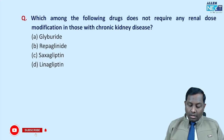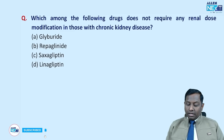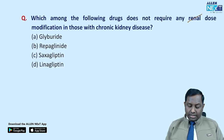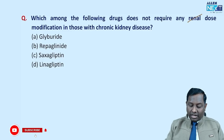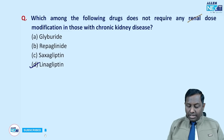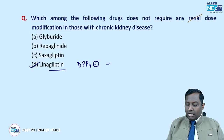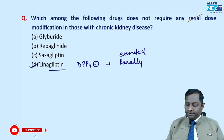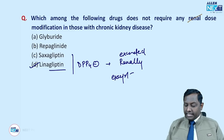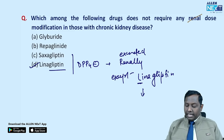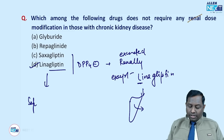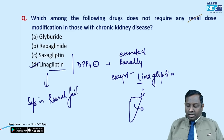Which drug does not require dose modification in patients with chronic kidney disease? The options include glyburide, repaglinide, saxagliptin, and linagliptin. This straightforward question has been repeated many times. The answer is linagliptin. All DPP-4 inhibitors are excreted renally except linagliptin, which is excreted via the hepatic route. Therefore, linagliptin is the safest and does not require dose adjustment in renal failure.